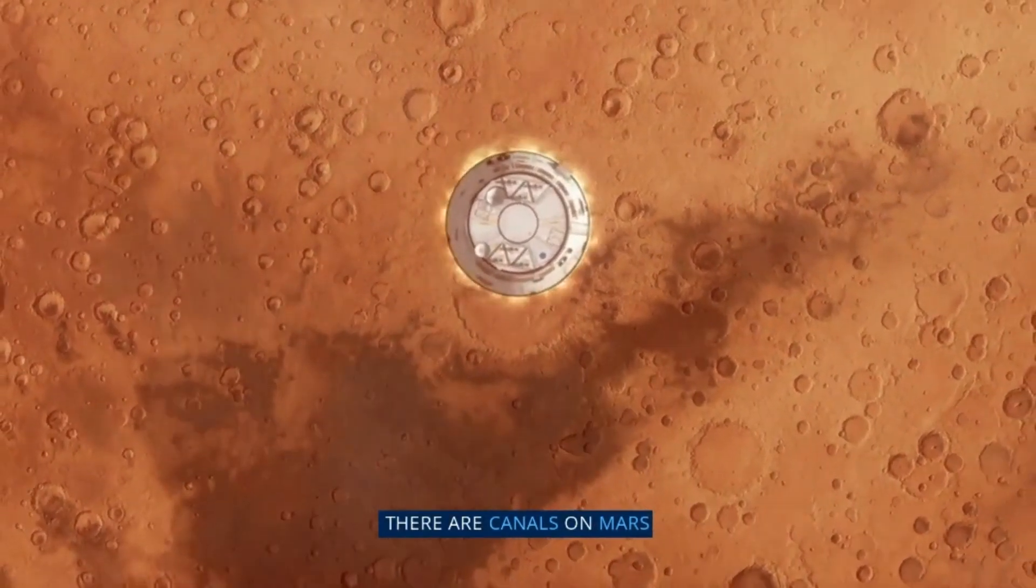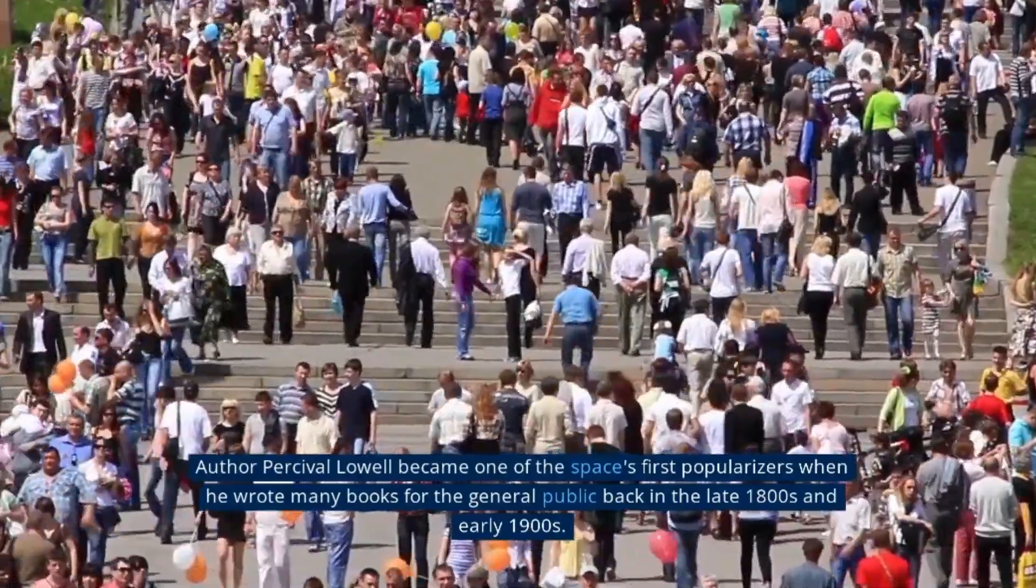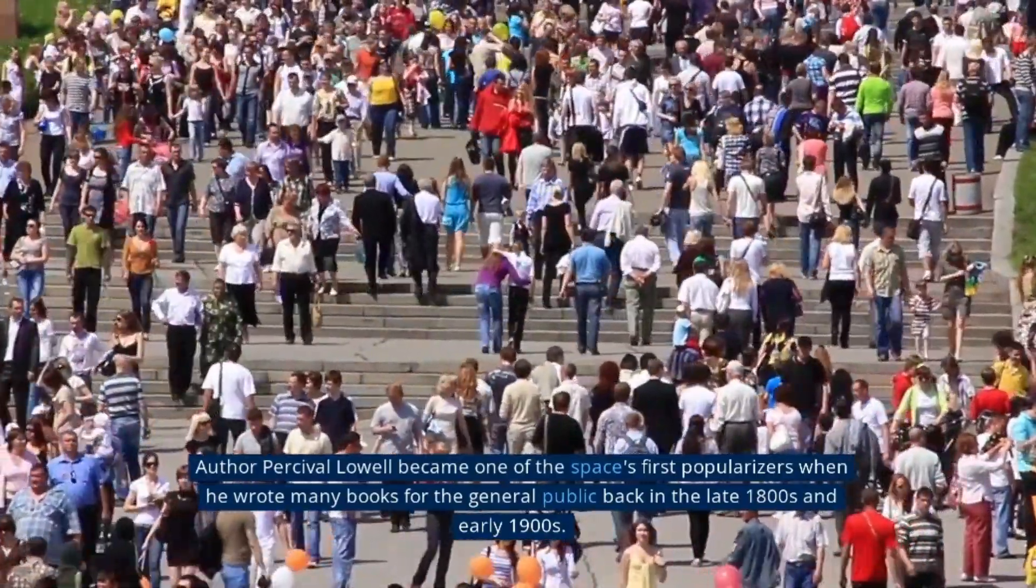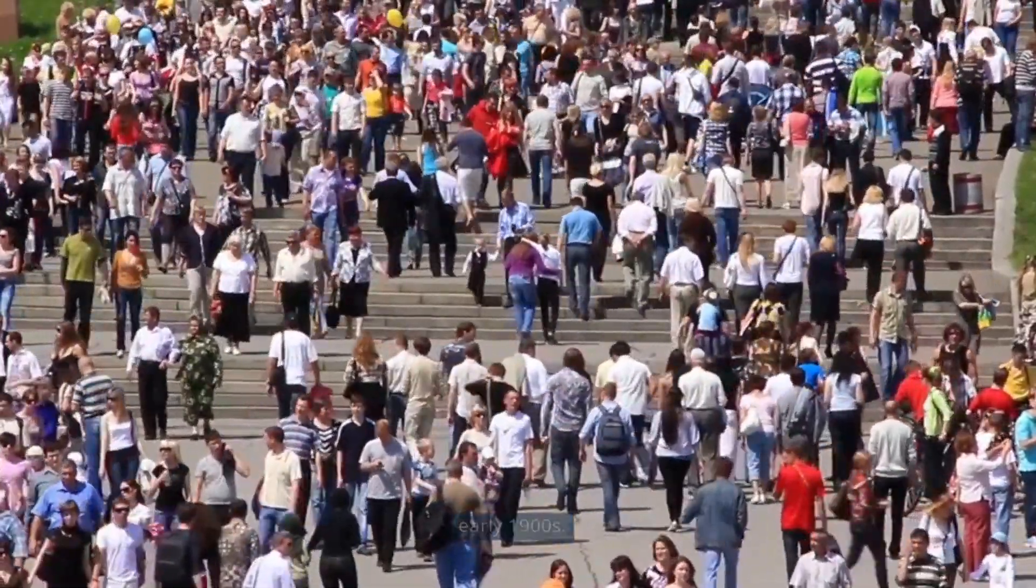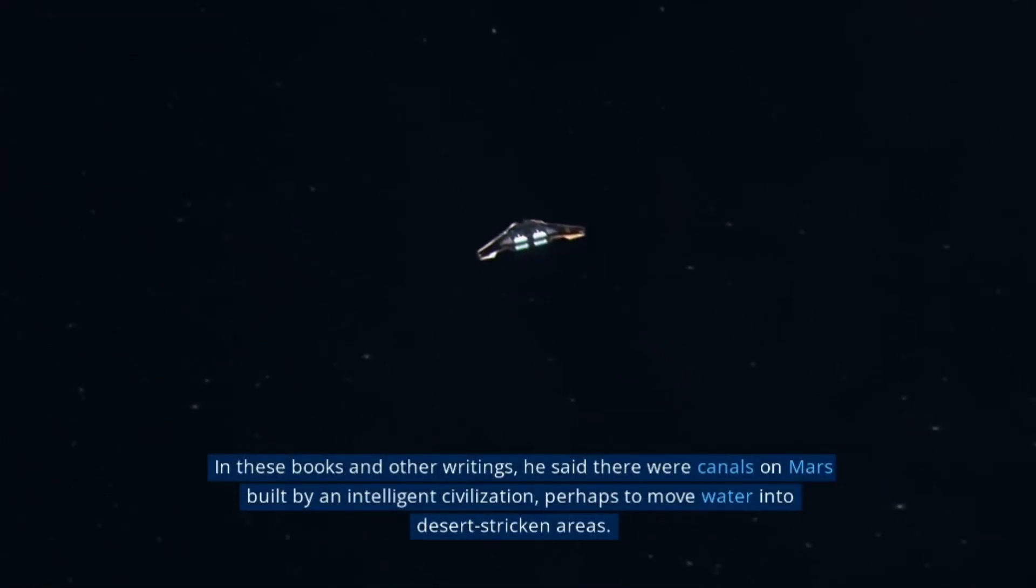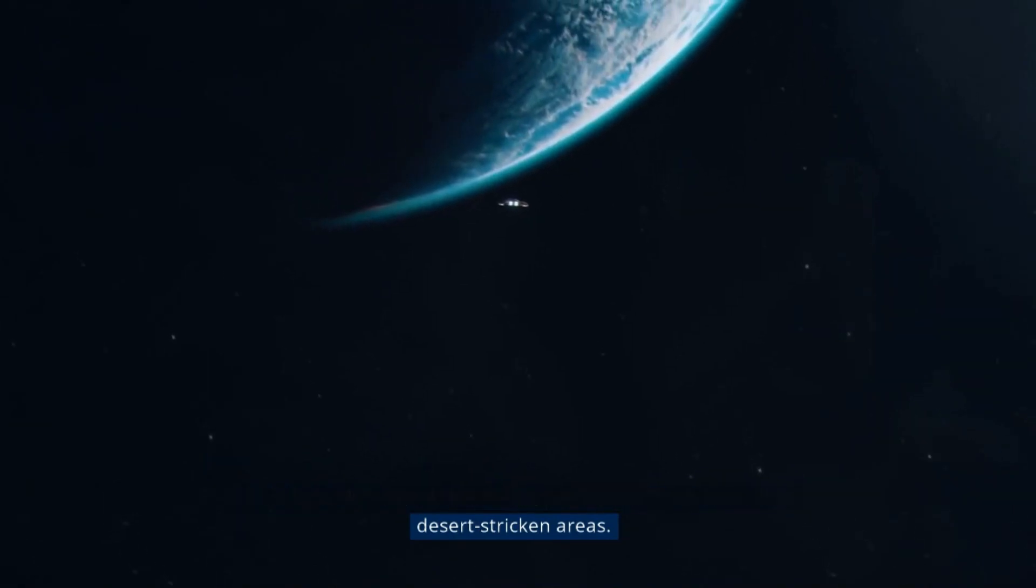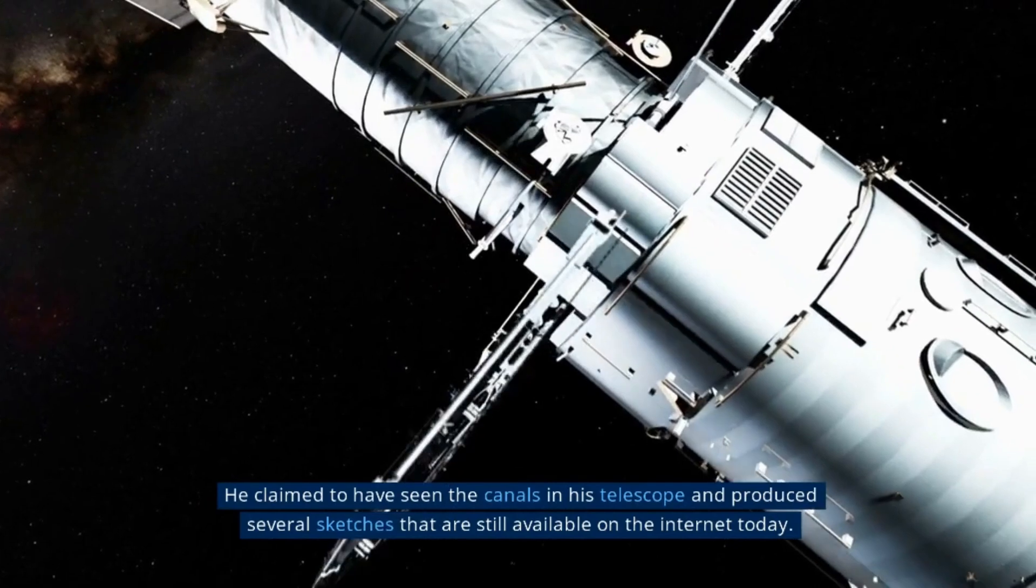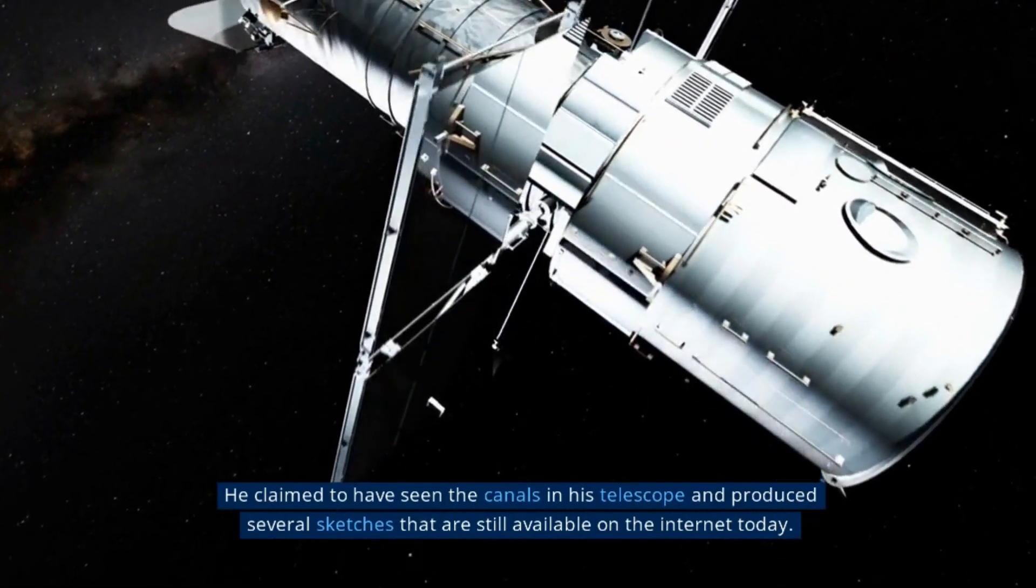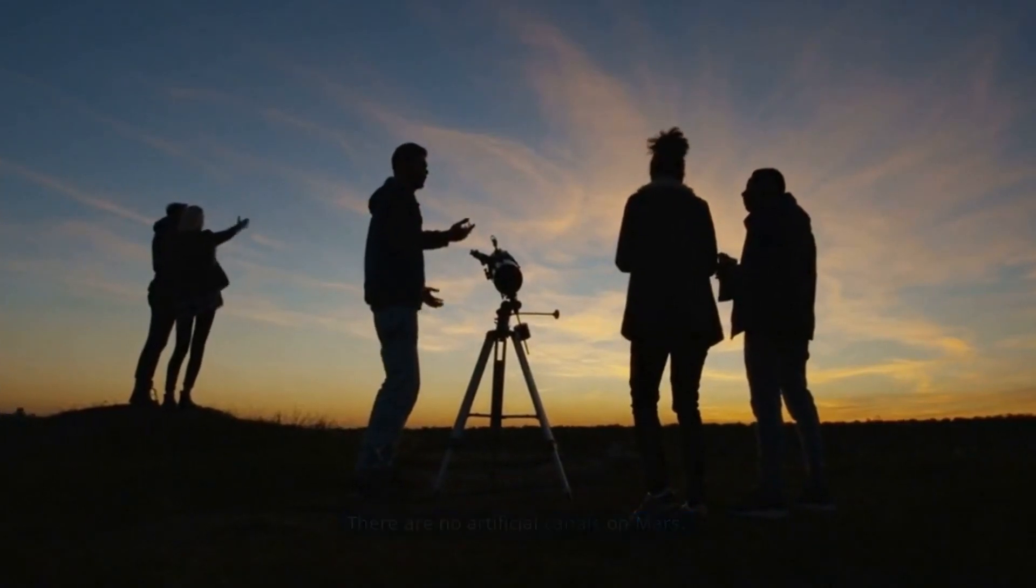There are canals on Mars. Author Percival Lowell became one of space's first popularizers when he wrote many books for the general public back in the late 1800s and early 1900s. In these books and other writings, he said there were canals on Mars built by an intelligent civilization, perhaps to move water into desert-stricken areas. He claimed to have seen the canals in his telescope and produced several sketches that are still available on the internet today. There are no artificial canals on Mars.